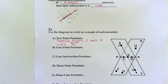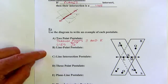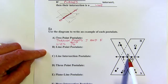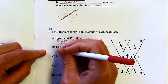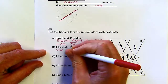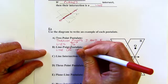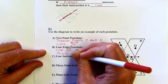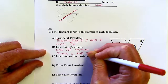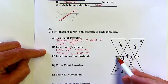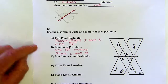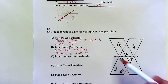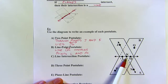For the line-point postulate — a line contains at least two points — line LM contains points L and M. K is also on that line, along with many other unnamed points. For the line-intersection postulate, when two lines intersect they meet at a single point, so lines LM and JN intersect at point K — that's the only place they intersect.